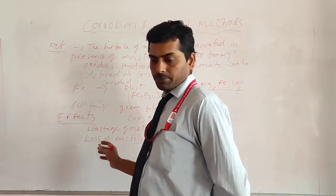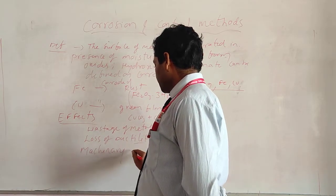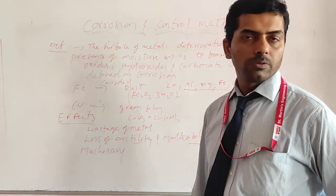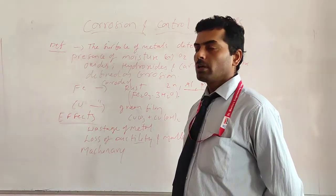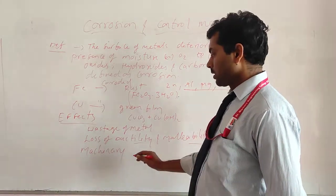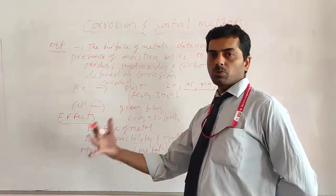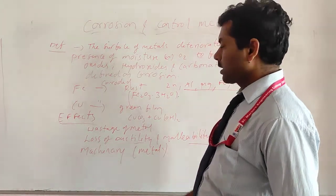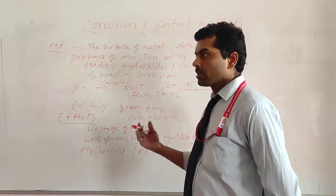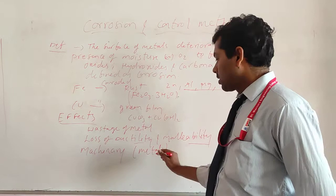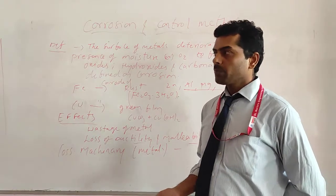Another effect: machinery damage. There are different types of machineries which use different types of alloys — for example, in defense equipment and aeroplane industries, we use different alloys by mixing different types of metals. When they are continuously exposed to the environment, there is conversion of metals into their hydroxides, carbonates, and sulfates. This leads to loss of machinery, and loss of machinery leads to loss of economy.